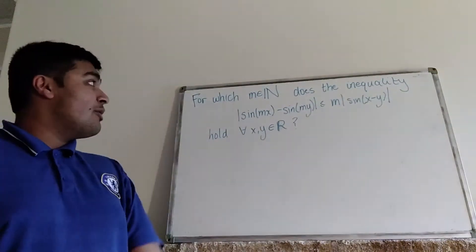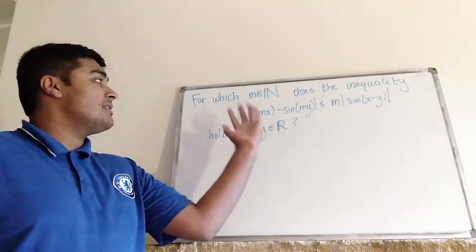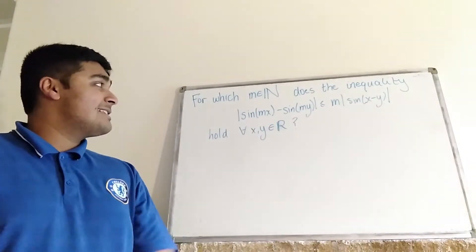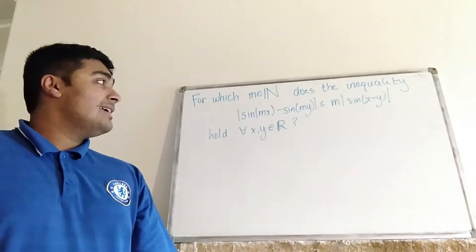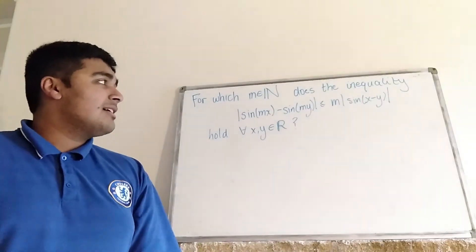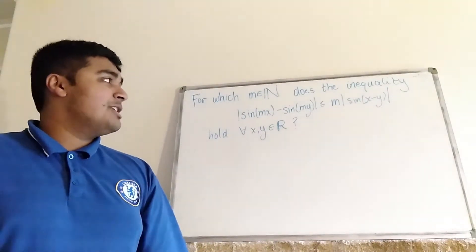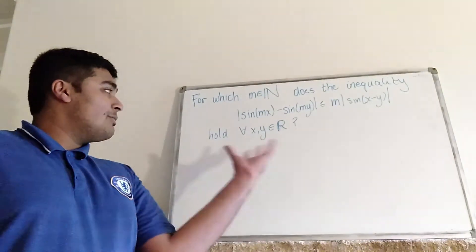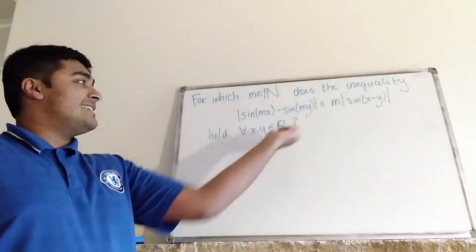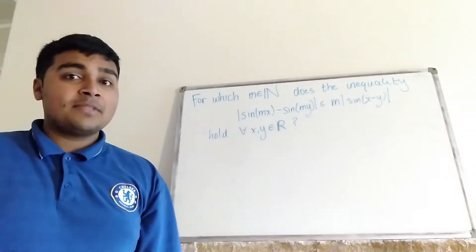We want to know for which natural numbers m does the inequality — the absolute value of sine(mx) minus sine(my) — is less than or equal to m times the absolute value of sine(x) minus sine(y). And we want to know for which values of m does this inequality hold for all real x and y.